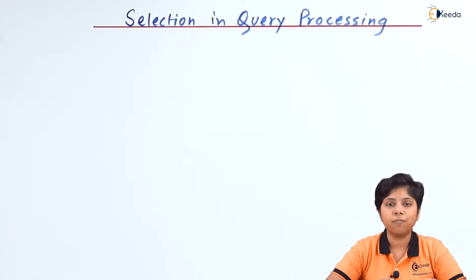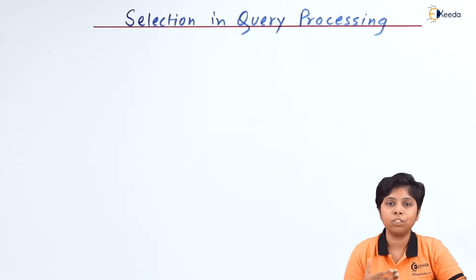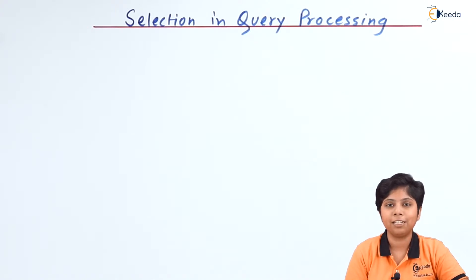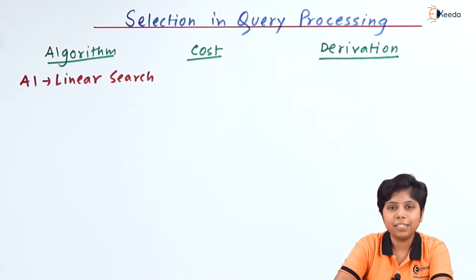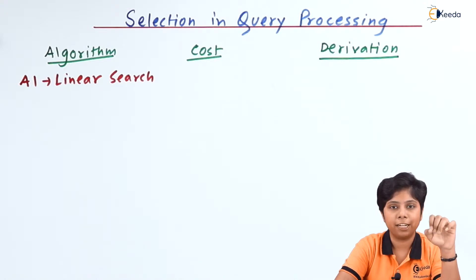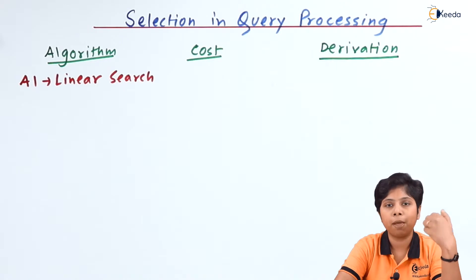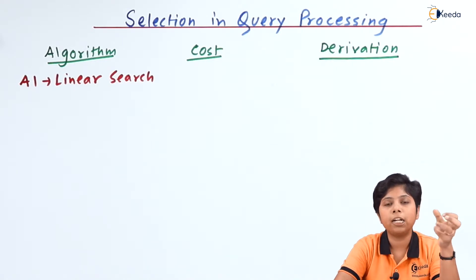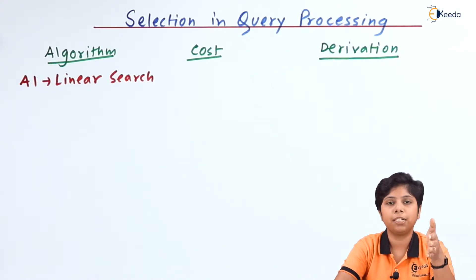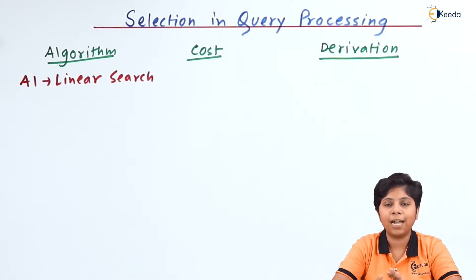We define each selection algorithm as A_i, from A1 to An. The first is A1, linear search. In linear search, we start from the beginning of a file and scan it. Scanning the file means reading each block from disk into memory, so this requires a number of block transfers equal to the number of blocks contained in the file.